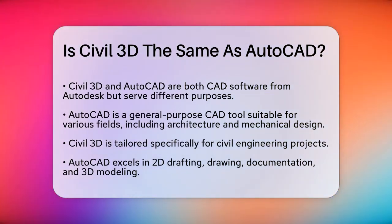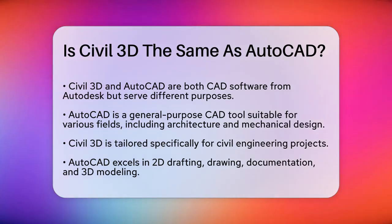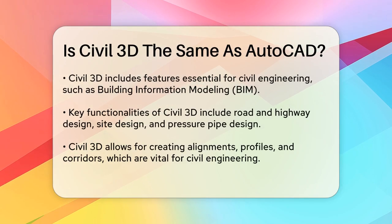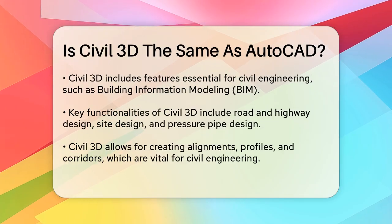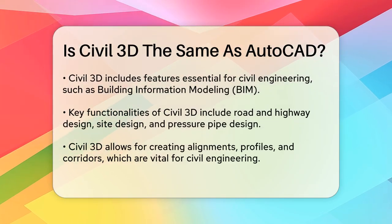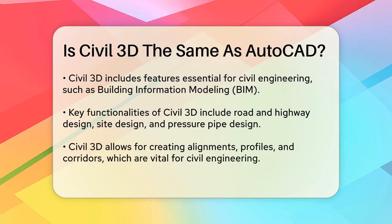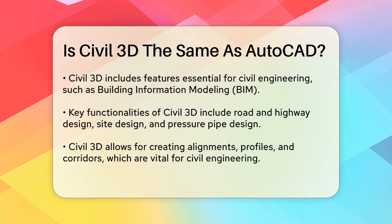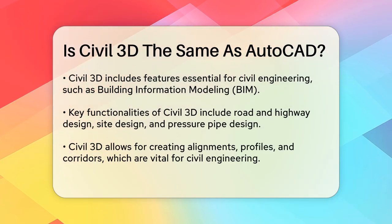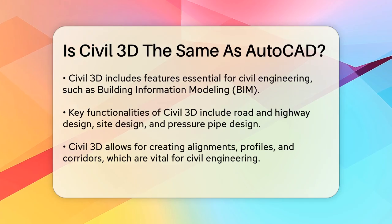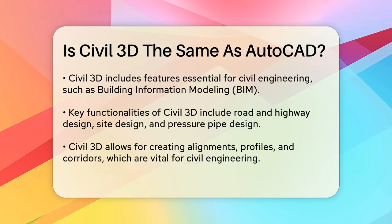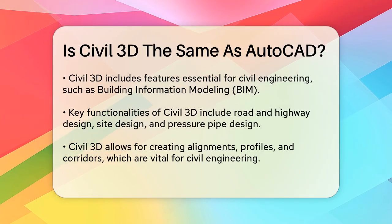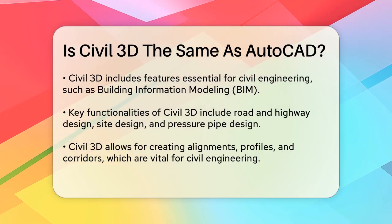On the other hand, Civil 3D is specifically designed for civil engineering projects. It's built on top of AutoCAD but includes additional features that are crucial for civil engineers. Civil 3D supports building information modeling (BIM) and has integrated tools for drafting, design, and construction documentation. It's ideal for tasks like road and highway design, site design, pressure pipe design, and storm and sanitary sewer design.